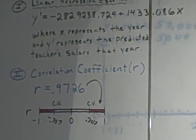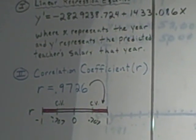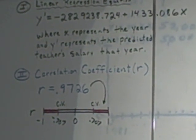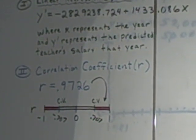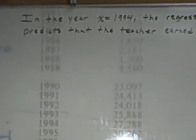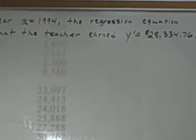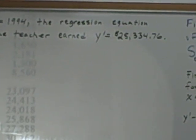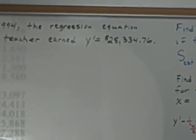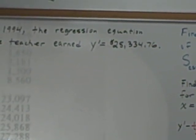It shows that there is a significant positive linear relationship between the data, and we used that equation to make a prediction that in 1994 the teacher's predicted salary would be $28,334.76.